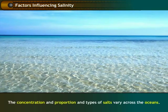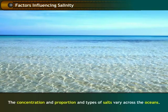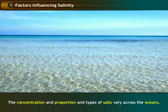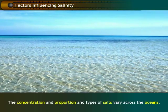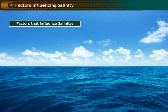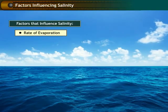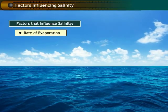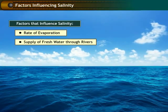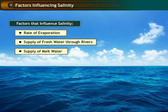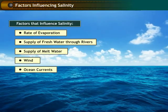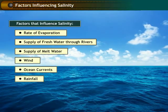The concentration, proportion, and types of salts vary across the oceans. The factors that influence salinity are rate of evaporation, supply of fresh water through rivers, supply of melt water, wind, ocean currents, and rainfall.